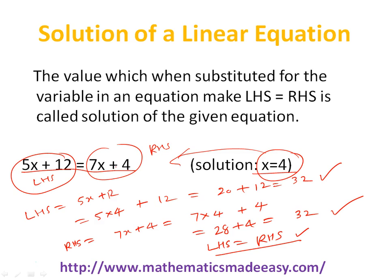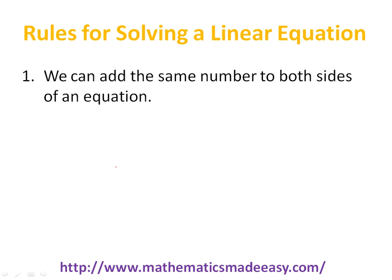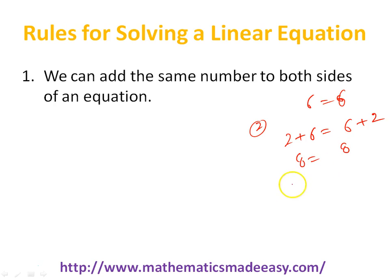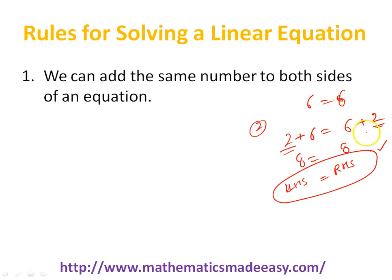Now we'll go through the rules — what are all the rules to solve a linear equation and figure out the solution of a particular variable. The first rule is: we can add the same number to both sides of the equation. Suppose I have the equation 6 equal to 6. If I add 2 on both sides — 2 on the left side and 2 on the right side — it becomes 8 equal to 8. The left hand side and right hand side are still the same.